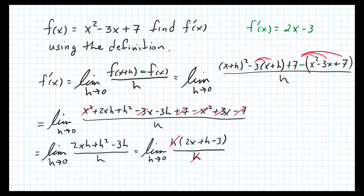We can now divide out the h, leaving the limit as h goes to 0 of 2x plus h minus 3. We can now evaluate the limit by substituting 0 in for h. When h equals 0, all that's left is 2x minus 3 — and that is the derivative we expected.